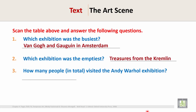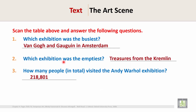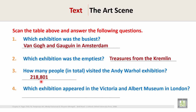Question 3: How many people in total visited the Andy Warhol exhibition? Scan the table and find the Andy Warhol exhibition. How many people in total? 218,801 people visited. So the answer is 218,801.